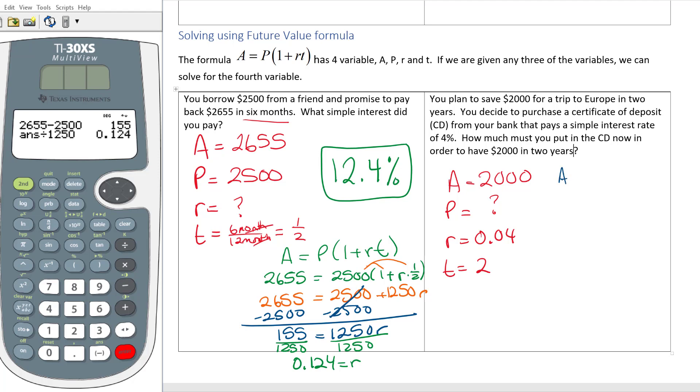I'm going to use my formula A equals P parenthesis 1 plus RT. My A is 2000. The P is I don't know, 1 plus R which is 0.04 times T which is 2. When I'm trying to reduce this, I have numbers in my parentheses, so I'm just going to go ahead, clear out my old values and just type it in the calculator. 1 plus 0.04 times 2. And inside the parentheses, I'm getting 1.08.